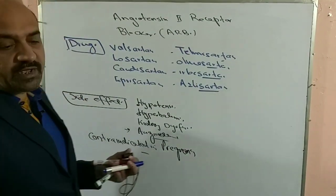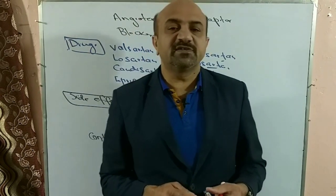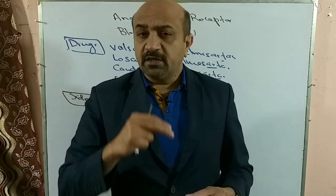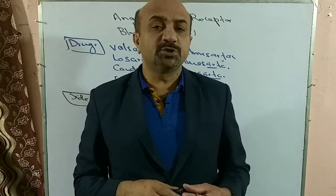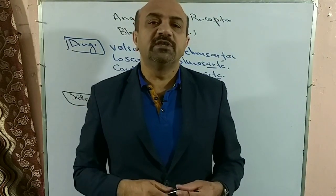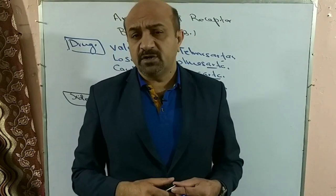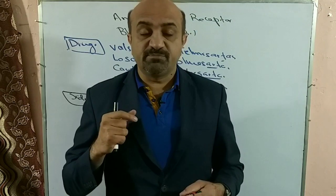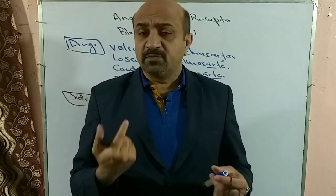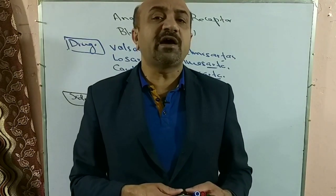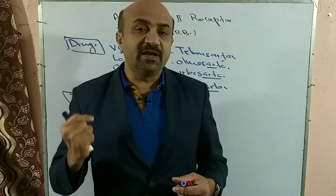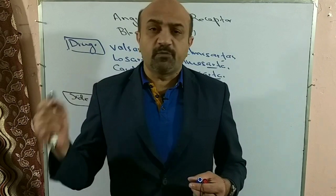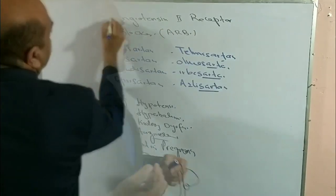An important benefit: patients on ACE inhibitors and ARBs — especially type 1 and type 2 diabetics with proteinuria — have their progression of kidney dysfunction halted or reduced. Doctors commonly prescribe these medications to stop the journey of proteinuric nephropathy. Some non-hypertensive patients are also put on ACE inhibitors and ARBs to decrease the progression of proteinuria and nephropathy.